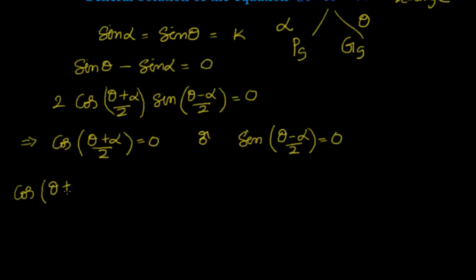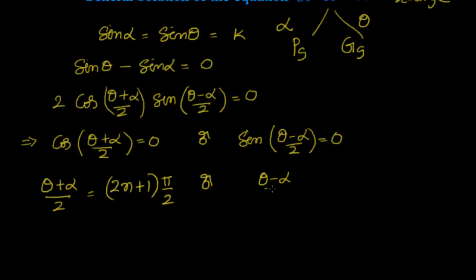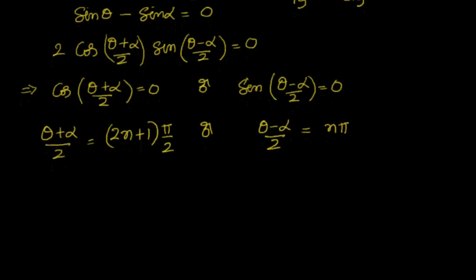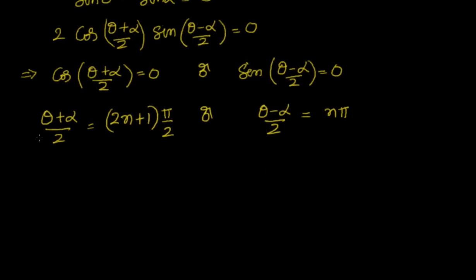So we can directly write: (θ+α)/2 = (2n+1)·π/2. For the sine case, sin((θ−α)/2) = 0 gives (θ−α)/2 = n·π, since sin is zero at all integer multiples of π. These are the two solution families, and the general solution must satisfy both.